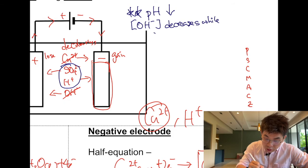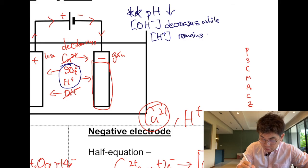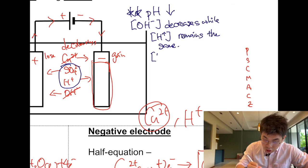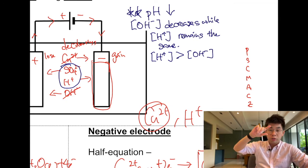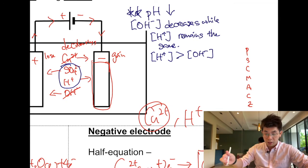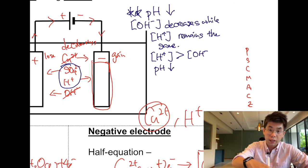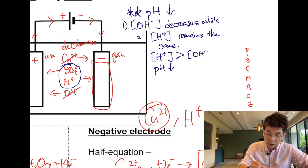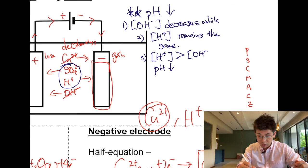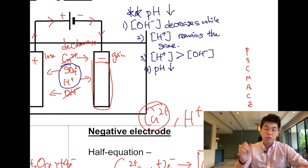The pH decreases because the concentration of OH− decreases while the concentration of H+ remains the same. Because of that, the concentration of H+ becomes more than the concentration of OH−, and because H+ is greater than OH−, the pH will decrease and will be less than 7.